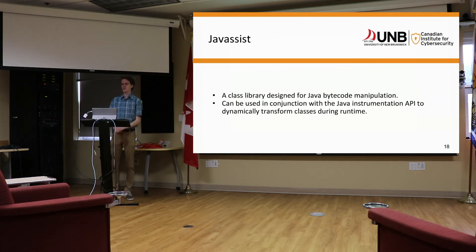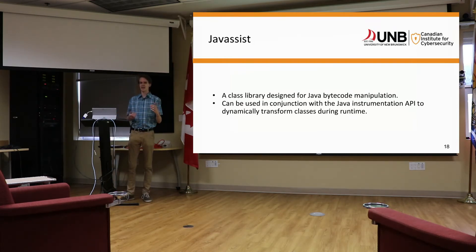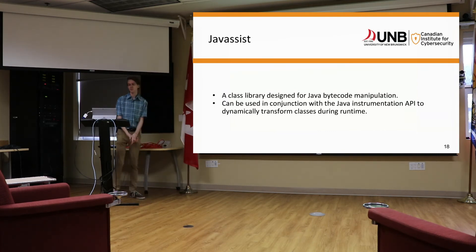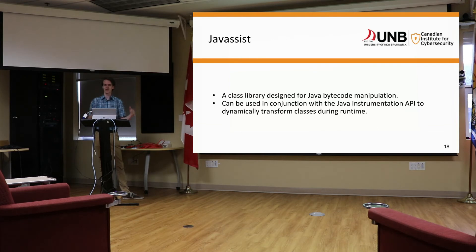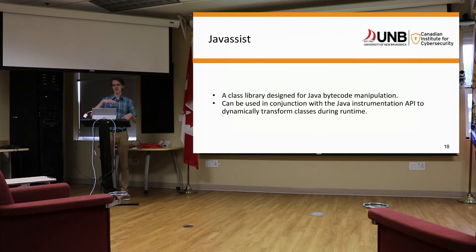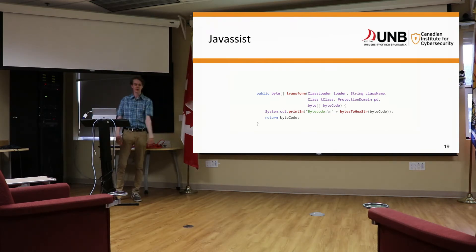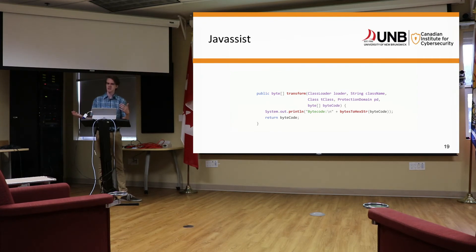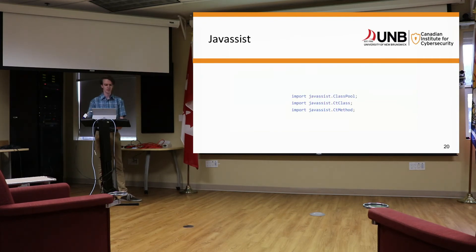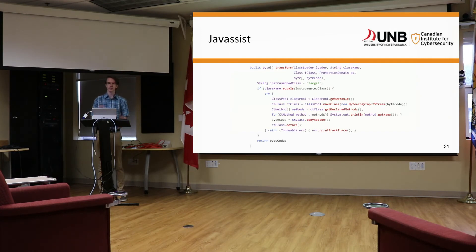Java Assist is what we're going to use to do bytecode manipulation. Java Assist is essentially an API that exposes functions you can use to manipulate Java bytecode. It can be used in conjunction with our Java instrumentation — so once we get that bytecode, instead of just printing it, we pass it to Java Assist and Java Assist does the rest. We import Java Assist, the ClassPool, the CtClass, and the CtMethod.